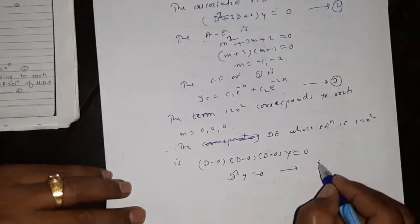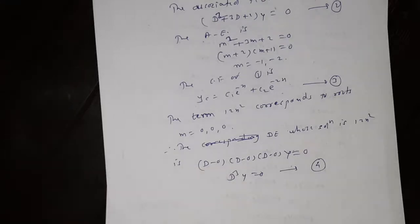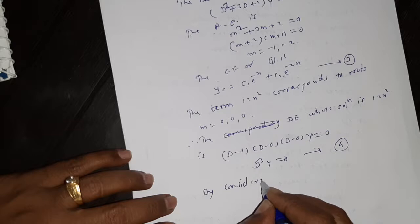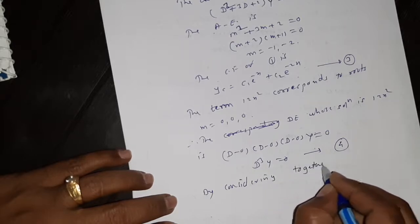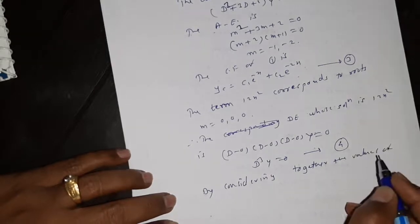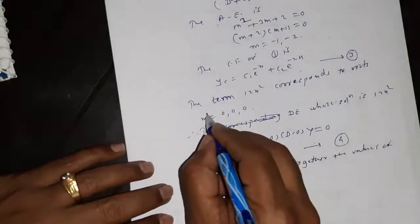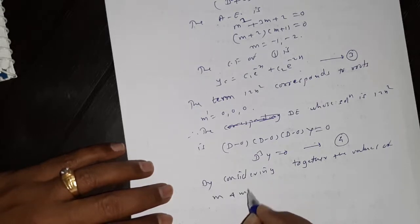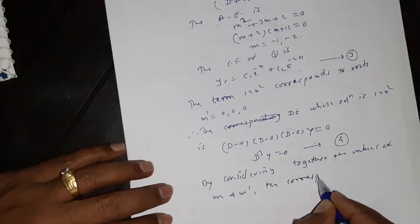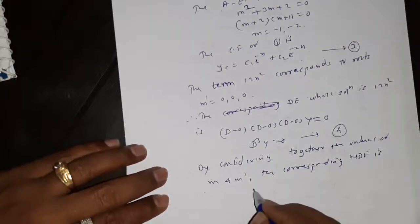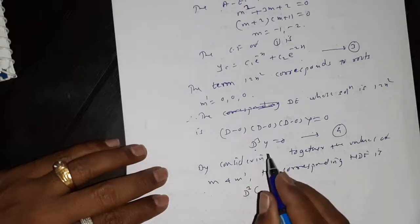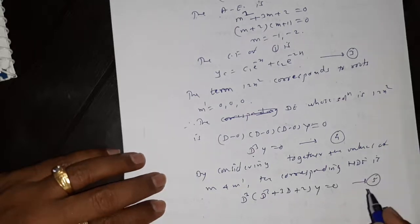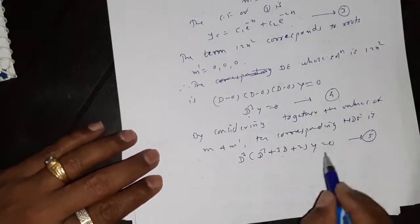By considering together the values of m and m-dash, the corresponding homogeneous differential equation is: g(D)·f(D)y equal to 0, that is d³(d² + 3d + 2)y equal to 0. This is equation number 5, which equals g(D)·f(D)y equal to 0.